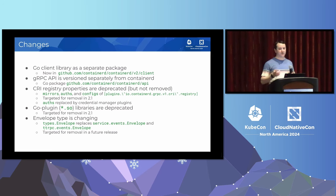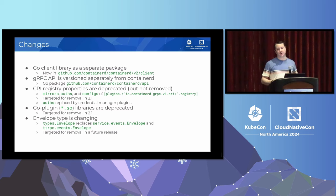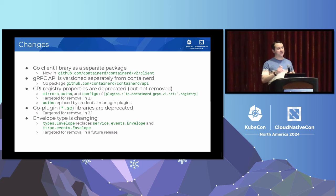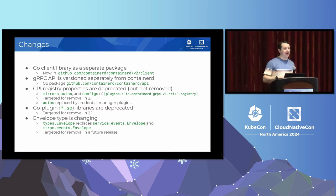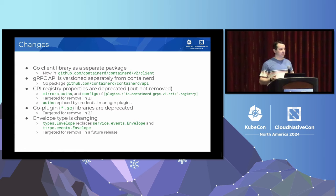Phil Estes, another ContainerD maintainer sitting in the front row, maintains a tool called Manifest Tool for manipulating multi-architecture container images. He did his own migration just after we released ContainerD 2.0, and it was just changing the import paths — he didn't have to do anything else. The old client library and old API versions continue to work with ContainerD 2.0, so there's no need to upgrade until you're ready to take on new features.